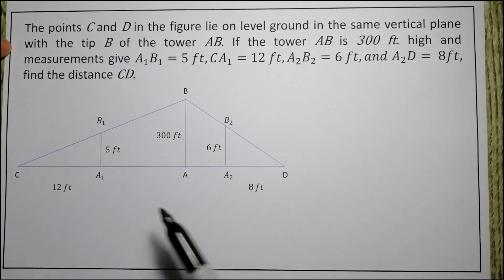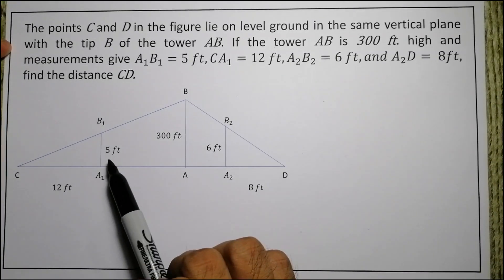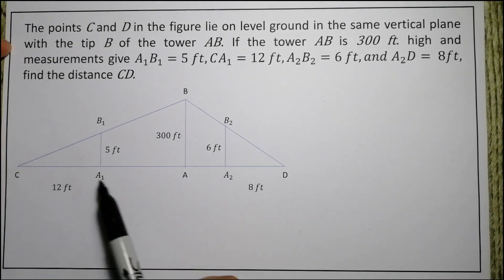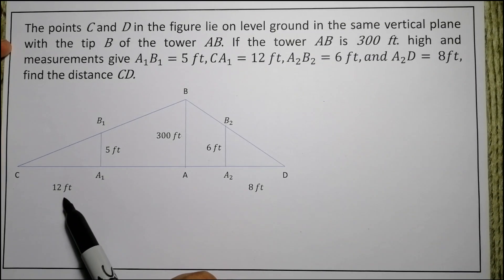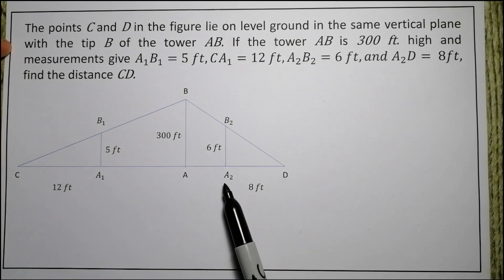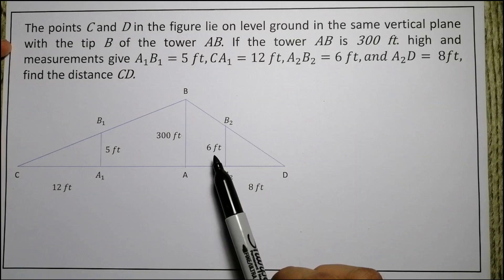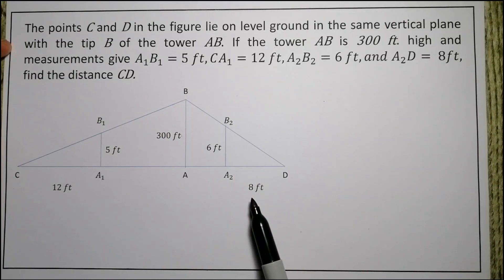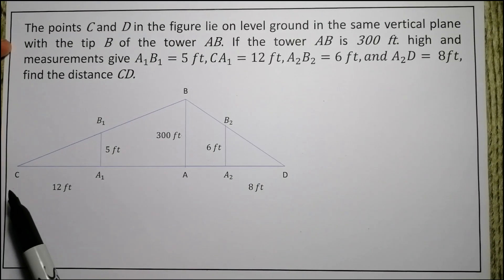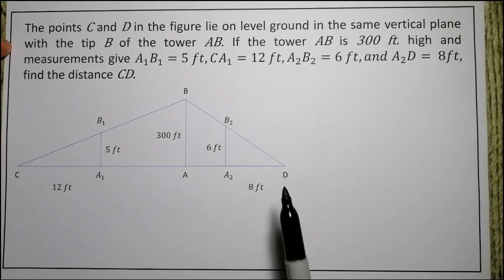And measurements give A₁ to B₁ is 5 feet, C to A₁ we have 12 feet, and then A₂ to B₂ is 6 feet, and A₂ to D is equal to 8 feet. Then let's find the value of C to D.